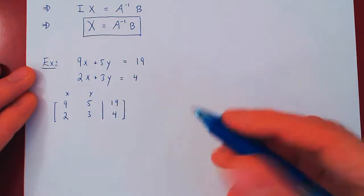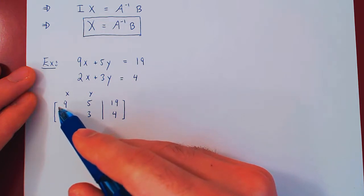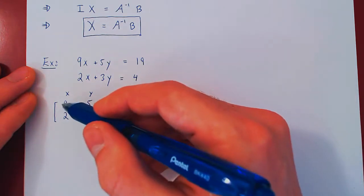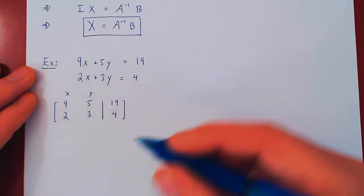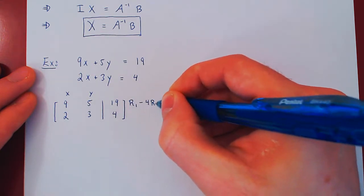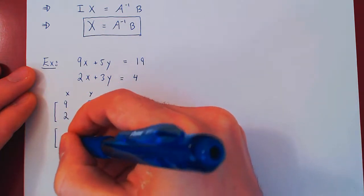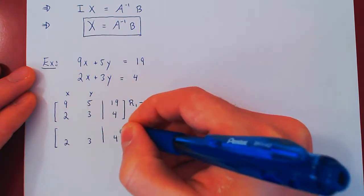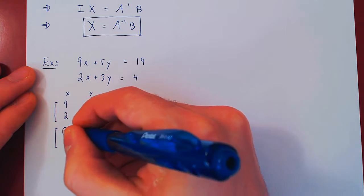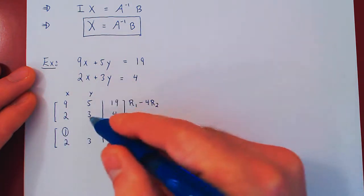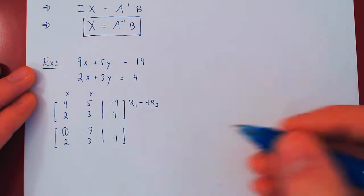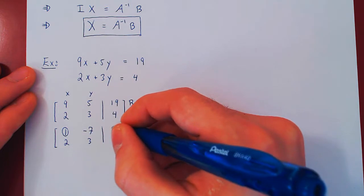OK, now here we have several options. We can multiply by 1 over 9, we can multiply here by 1 half and then swap the rows, but we can be sneaky. We can do row 1 minus 4 times row 2, as 4 times 2 is 8. So 9 minus 4 times 2 is 8, 9 minus 8 is 1. This is our leading 1. 5 minus 4 times 3 is minus 12, negative 7. 19 minus 4 times 4 is 16, which is positive 3.